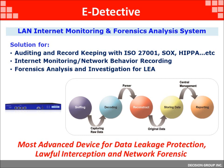Inside the eDetective, there are several modules for different functionalities. The first module captures network data packets — we call it the sniffing module. Behind the sniffing module is a second module called the decoding module. The decoding module reads the headers of data packets, and with the information from the header, it collects all the payload together for the third module.